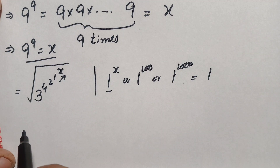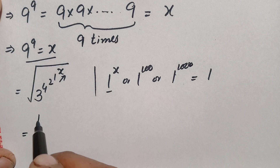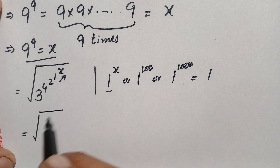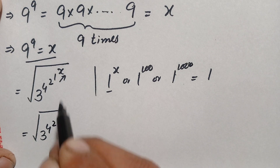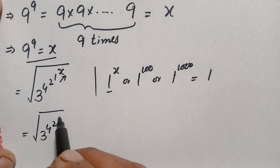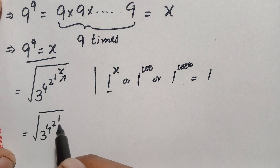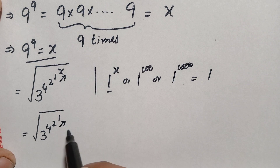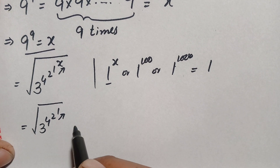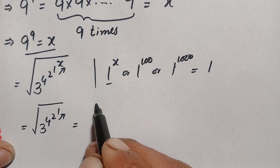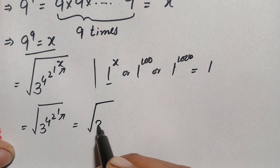The expression now becomes the whole square root of 3 raised to the power 4, raised to the power 2, raised to the power 1. We now find the value of 2 raised to the power 1. Since 2 raised to the power 1 is simply 2, we replace that with 2, giving us 3 raised to the power 4, raised to the power 2.